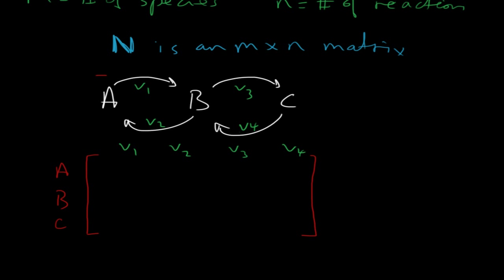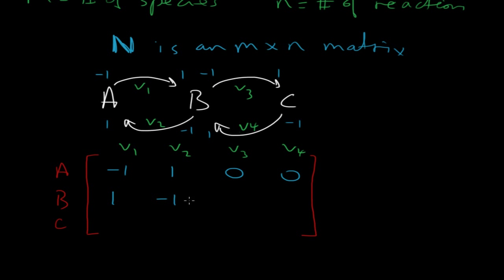The stoichiometric coefficients are: minus 1, plus 1, minus 1, plus 1, minus 1, plus 1, and so on. For A: stoichiometric coefficient on V1 is minus 1, plus 1 on V2, and zeros for V3 and V4 since A is not involved. For B, which has all four reactions involved, I write out V1, V2, V3, and V4 accordingly. Finally, C is not involved in reactions 1 and 2, but has a stoichiometric coefficient of plus 1 on V3 and minus 1 on V4. And that's the matrix for this system.